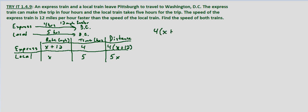So we can set them equal to one another and then solve for x which again is the speed of or the rate of the local train. So 4 times x plus 12 equals 5x. We distribute the 4. So 4x plus 48 equals 5x. Subtract 4x from both sides and we get 48 equals x. And again that's the speed of the local train.